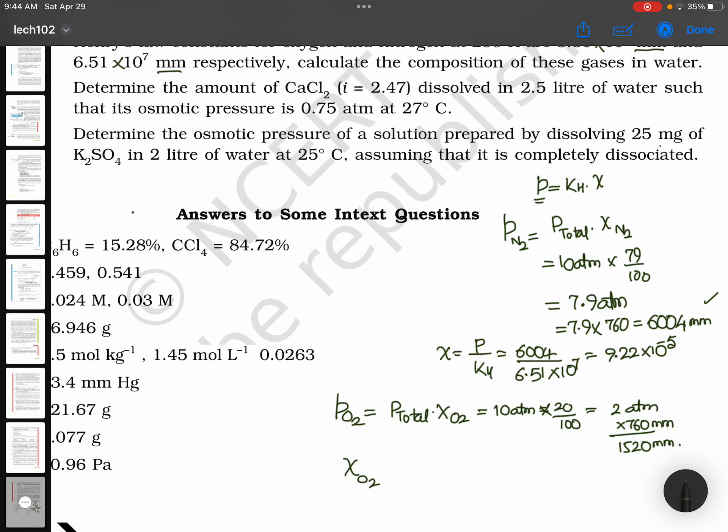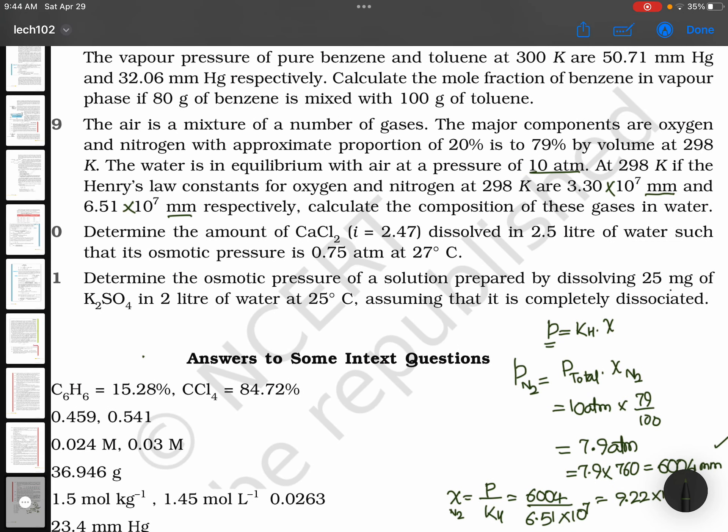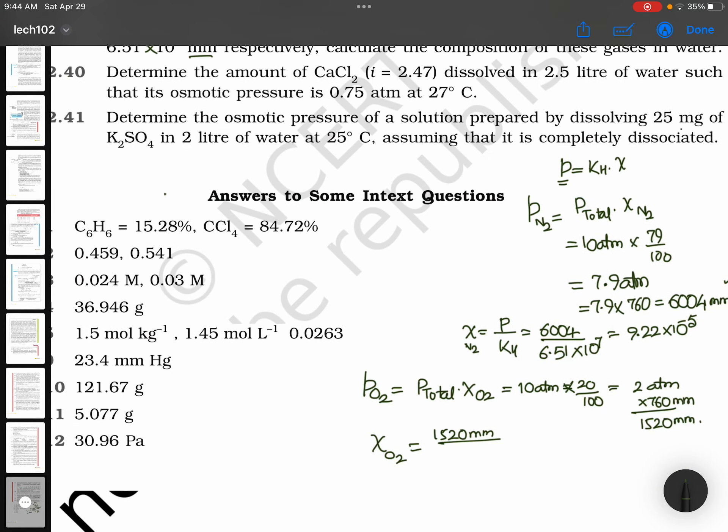Now, mole fraction of oxygen equals 1520 millimeters divided by its Henry's constant. For oxygen, it is 3.3×10^7 millimeters. So, the mole fraction of oxygen will be 4.6×10^-5.